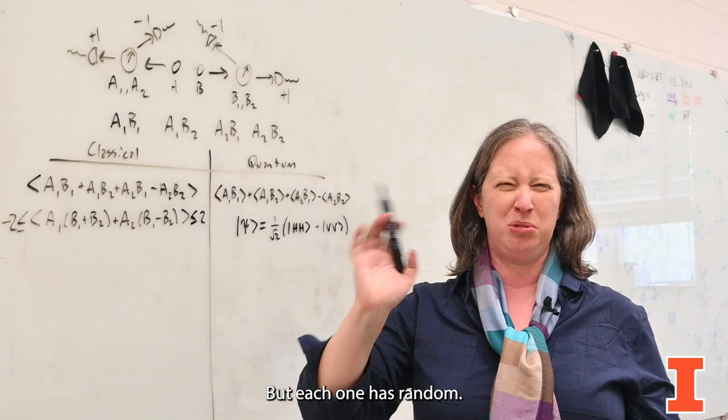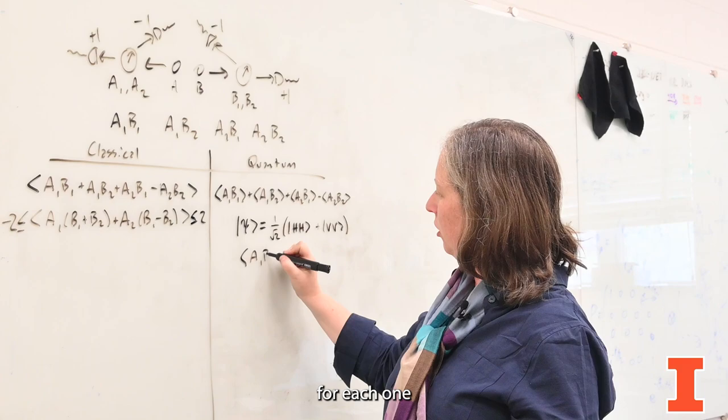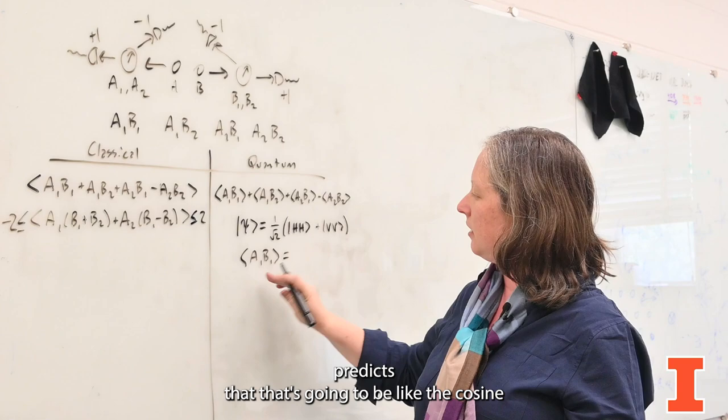But each one has random. So if I only measure one, I'm just going to see random. But if I have both, then I'm going to see the same. And what that means is that quantum mechanics predicts for each one of these little quantities here,